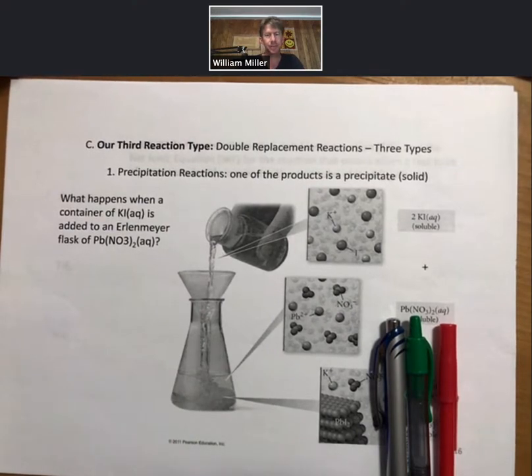Our third reaction type that you have to be able to write for me on quizzes and exams are called double replacement reactions. And even within those, there are three types or three subtypes, but they all follow the same pattern. Some other instructors call them double displacement reactions.